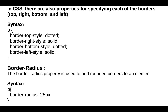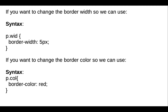In CSS there are also properties for specifying each side of the border individually: top, right, bottom, and left. We can use border-top-style, border-right-style, border-bottom-style, and border-left-style. Next, we use border-radius, which is used to add rounded borders to an element — for example, border-radius: 25px. We can also use border-width (e.g., 5px) and border-color (e.g., red) to customize the border.